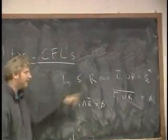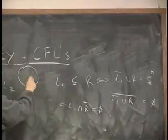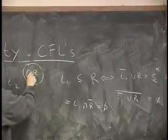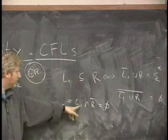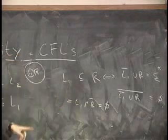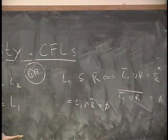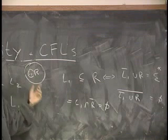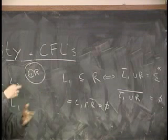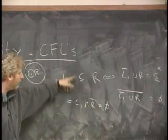L1 is a subset of R. Here's R. Here's L1. L1 is a subset of R if the intersection between L1 and R complement is empty. If there's nothing that comes out of here. You can make a Venn diagram. Maybe it's easier to see than the discrete math way. But these two are equivalent.